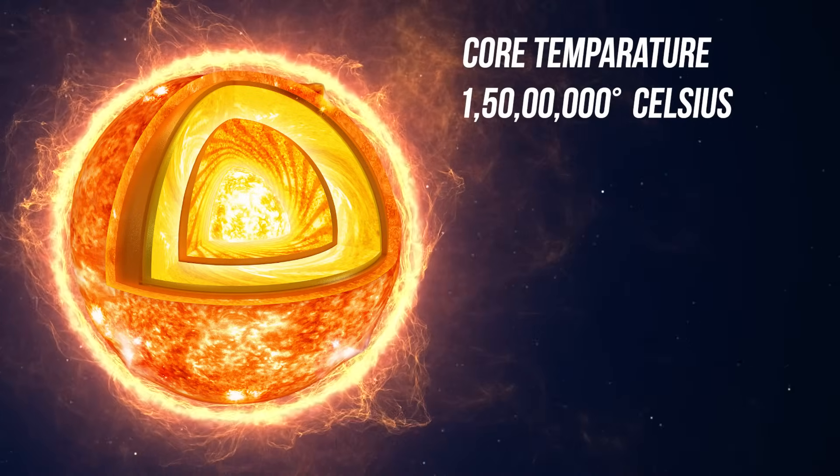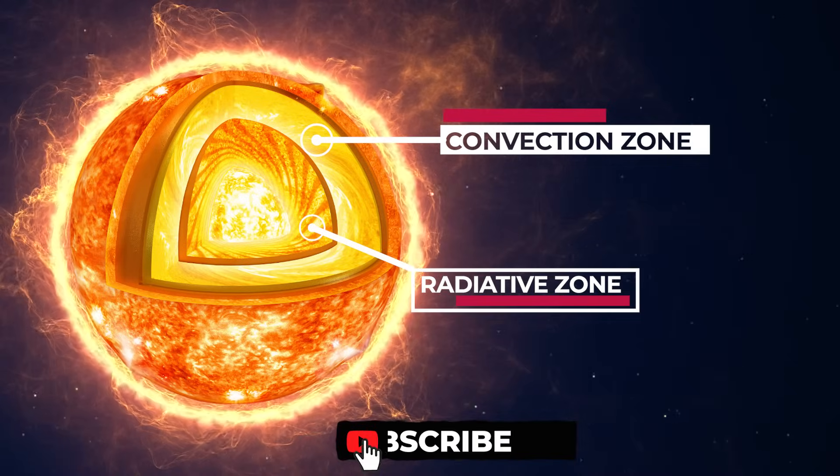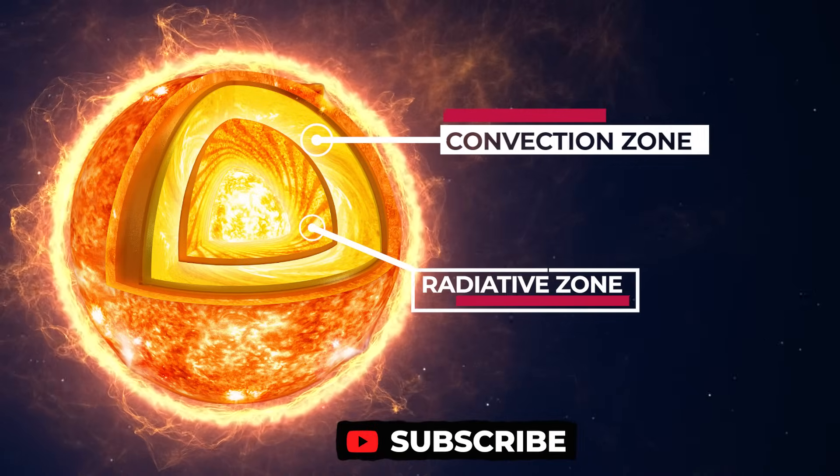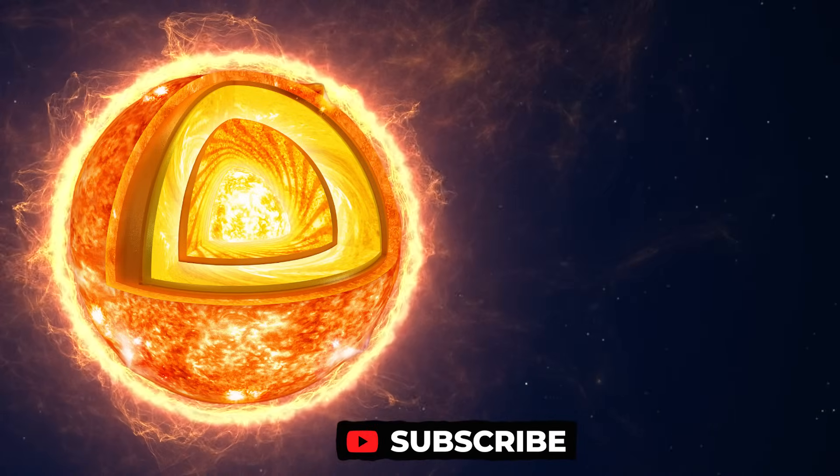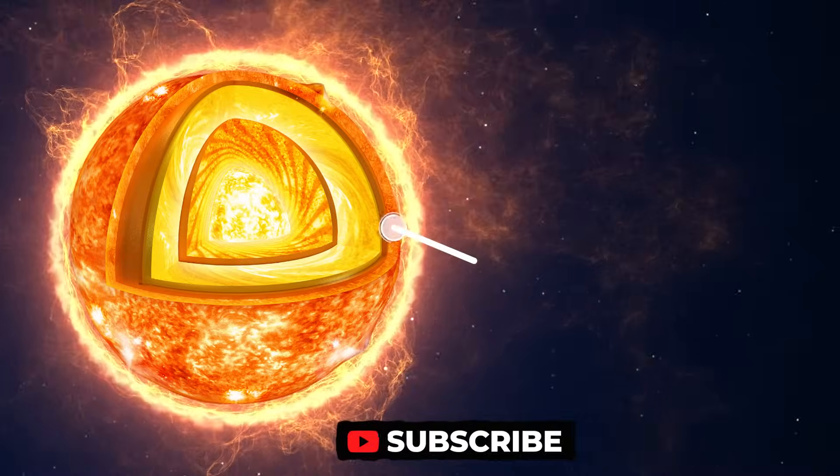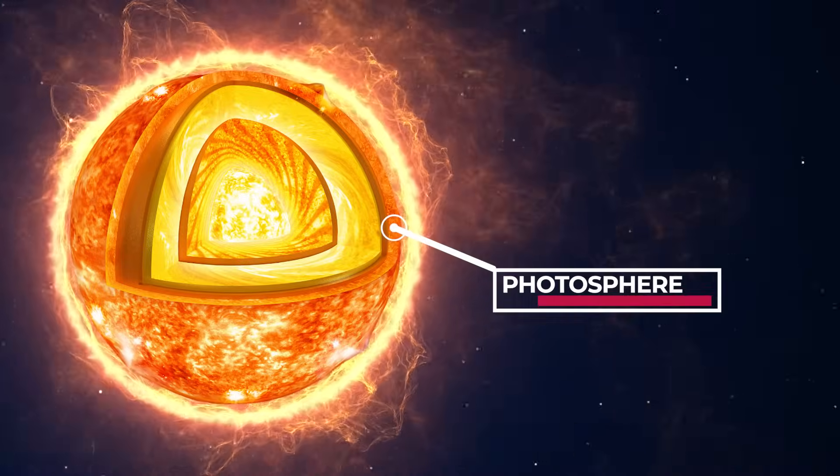Outside the core, there are Radiative Zone and the Convective Zone. These two layers that come before reaching the surface of the sun. Following these layers, there's another layer on the sun's surface and it's called as photosphere. The sun actually doesn't have a surface like the earth.